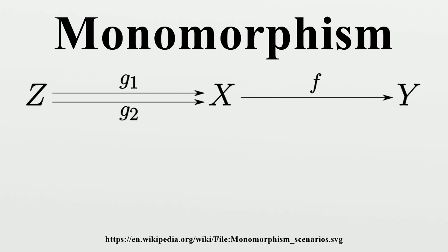Relation to invertibility: Left-invertible morphisms are necessarily monic. If l is a left inverse for f, then f is monic, as a left-invertible morphism is called a split mono. However, a monomorphism need not be left-invertible.